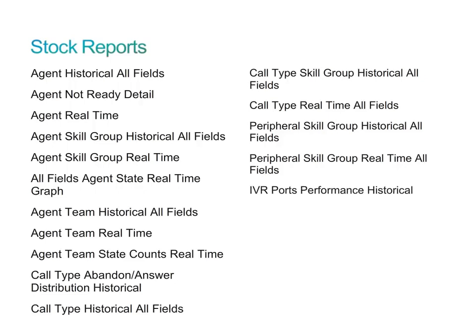The IVR Port Performance Historical report shows the performance of IVR ports for the selected period of time, presenting a table of half-hour counts of IVR ports in service, ports idle, and time in hours, minutes, and seconds that all ports were busy. The Audit Trail feature allows you to view the sequence of audit records for each transaction or action performed on the Cisco Unified Intelligence Center server. The User to Object Report contains all the entities of the user, and the Object to User Report contains all the users or entity names that share the object.